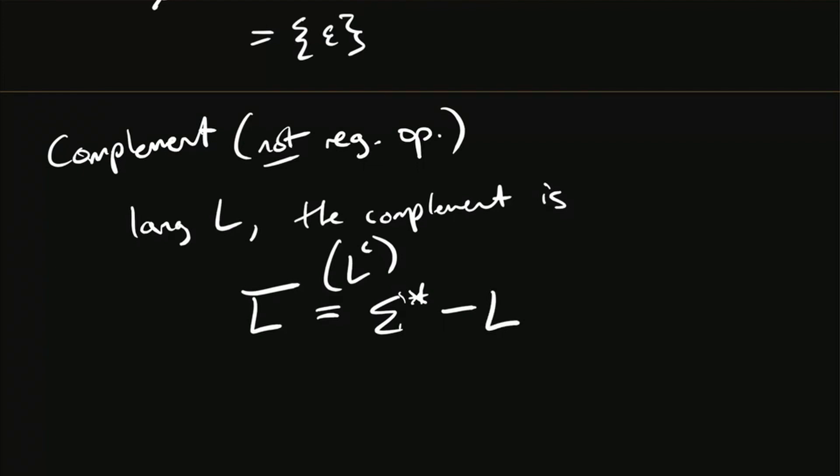And the way we write that is sigma star minus L. So start off with all possible strings, take all the ones in L away, you get the complement. I've seen notation like sigma star with a diagonal slash L. And I may switch between the two, but I'll try to stick with L bar because that means the complement. Any questions on what complement actually is?